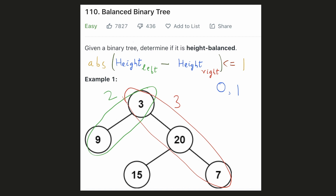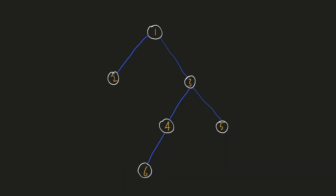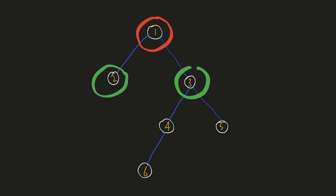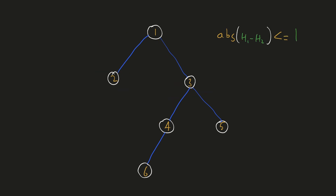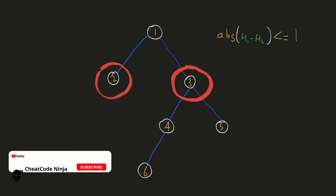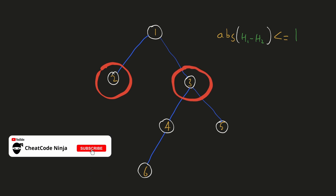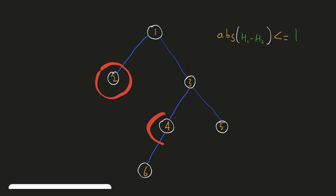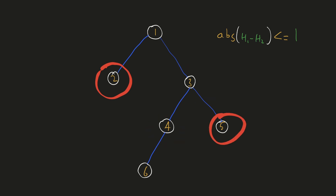Let's try to come up with an intuitive solution. The necessary condition for checking if a node is balanced is that both of its child subtrees should also be balanced. There is also one other necessary condition: the difference in the heights of the two subtrees should be at most 1. Whether a child subtree is balanced depends upon whether their subtrees are balanced, down to the very last leaf element.